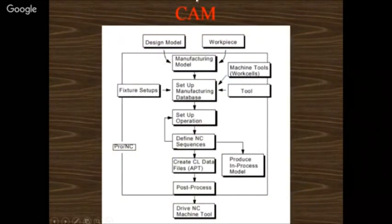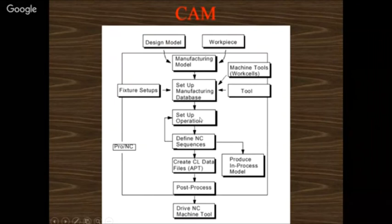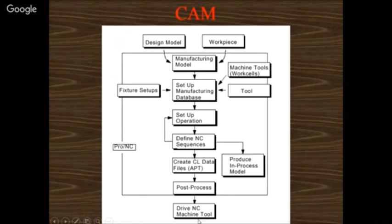A brief CAM flowchart: design model → select workpiece (manufacturing model) → set up database → select machine tool → define NC sequences. For milling: volume milling, pocketing, drilling. For turning: facing, step turning, knurling, threading. Once you get these sequences, you get cutter location data in the form of APT (Advanced Programming Tool). Then post-processing converts to NC data in the form of G-codes and M-codes. This is about CAM.